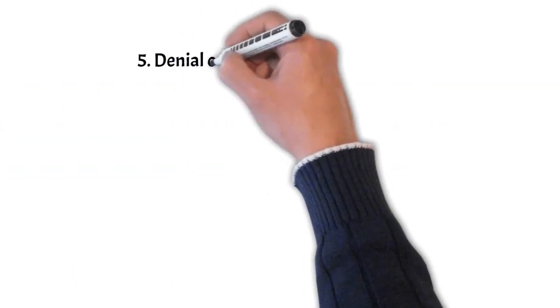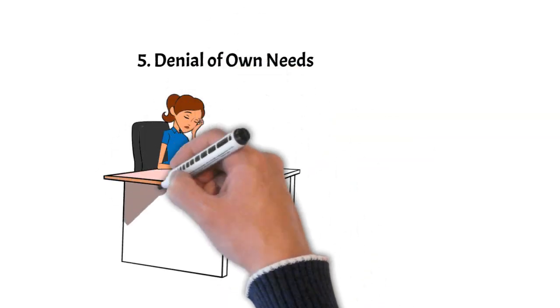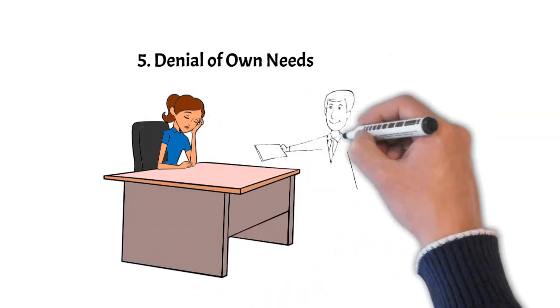Number five, denial of own needs. They often suppress or deny their own needs, which can lead to resentment or passive aggressiveness when those needs aren't met.